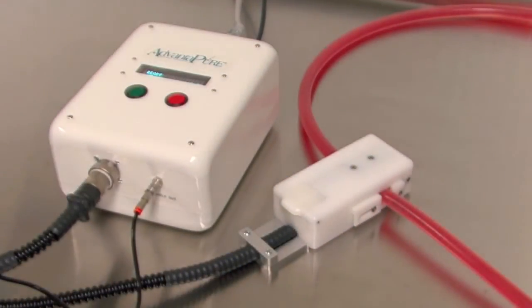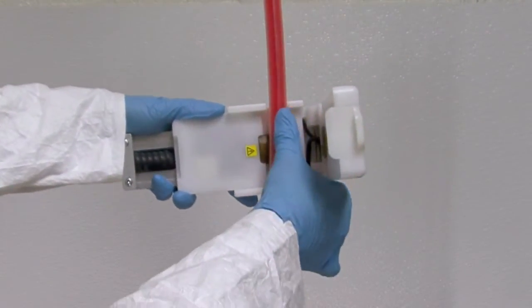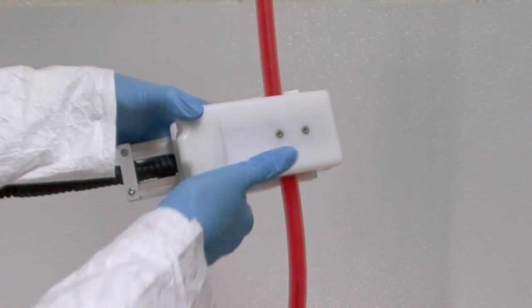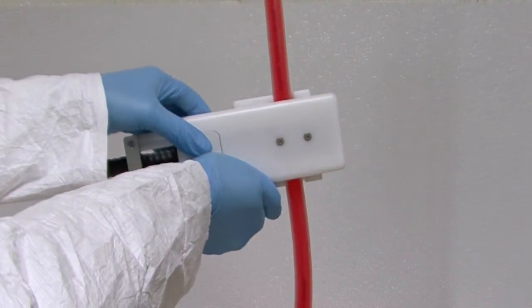The tubing is placed within the sealing head and the button on the base unit starts the process. With its portable lightweight sealing head, this unit, the Advantitube Sealer, works just as well on hanging manifolds and tubing as it does on a tabletop.